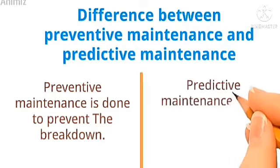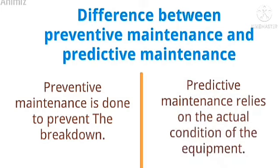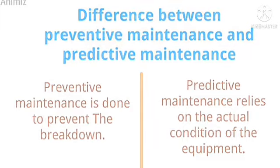On the other hand, predictive maintenance relies on the actual condition of the equipment. In this case the machine is still working, but you want to predict that this machine has been working for a long time so I should service it. So you predict that you've been using this machine for about six months now, so it is time to service it so that it will not break down. It's like you are making an educated guess about when to maintain the machine.